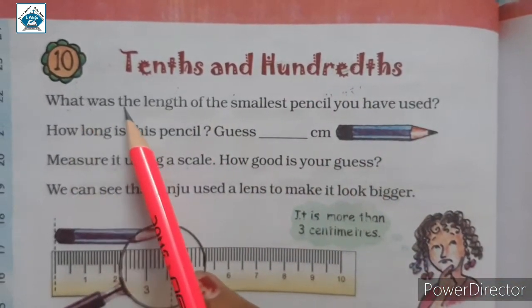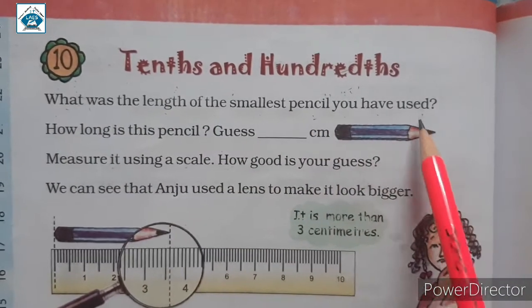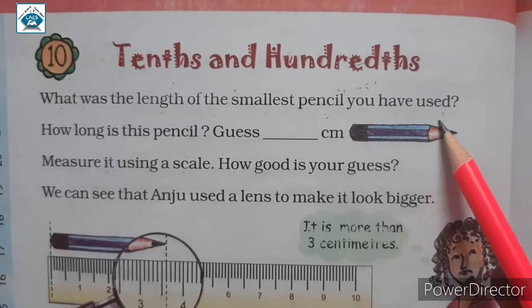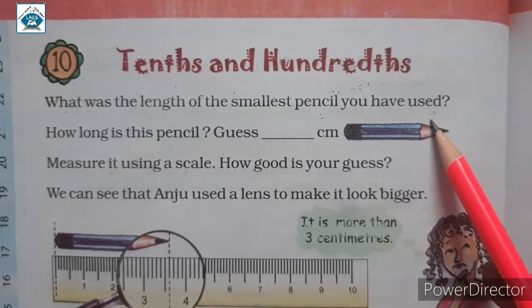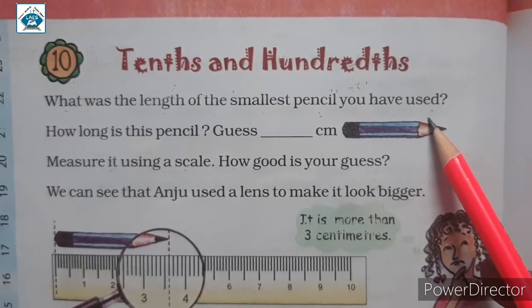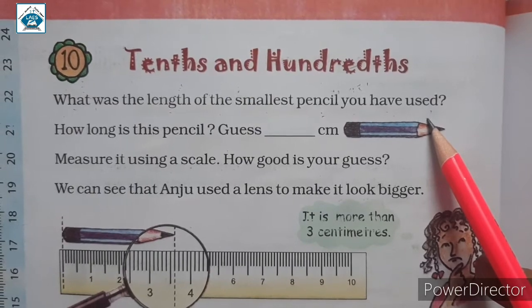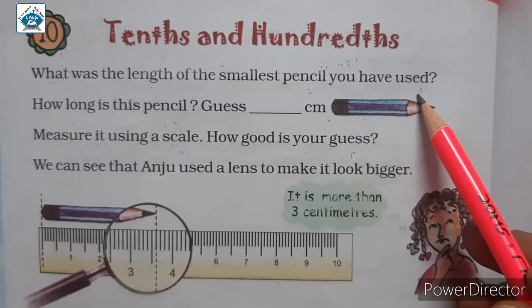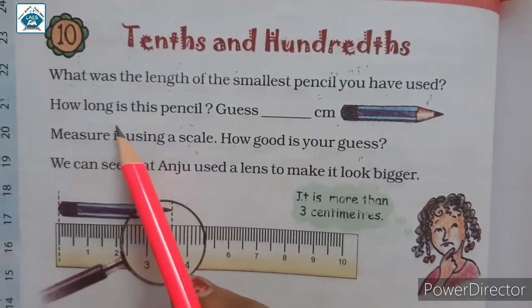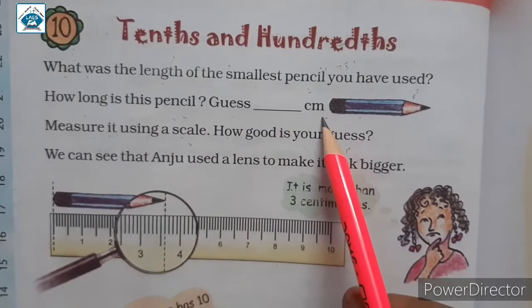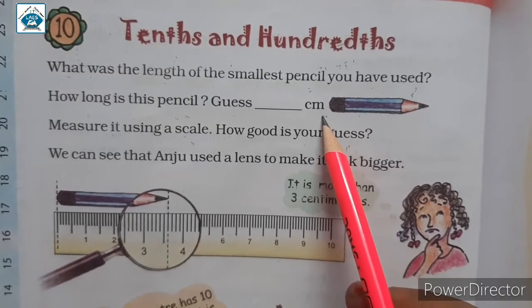Now, what was the length of the smallest pencil you have used? You can answer it according to your experience. According to my experience, the last pencil I used was approximately 3 centimeters. You give your answer — it may be 4 centimeter or 5 centimeter. How long is this pencil? Guess in centimeter. I think it may be between 3 to 4 centimeter.